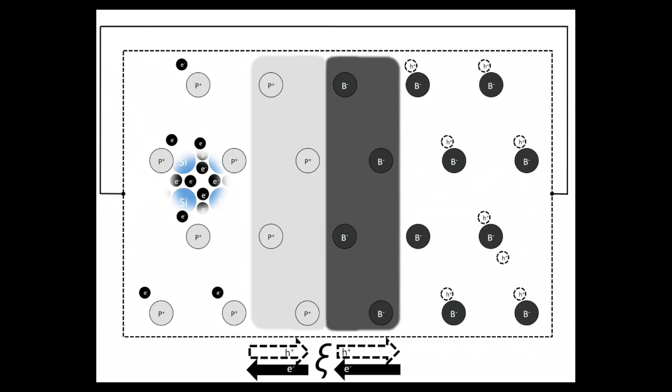As light continually shines on the solar cell, charges are constantly being pushed out of the device and driving the electric current.